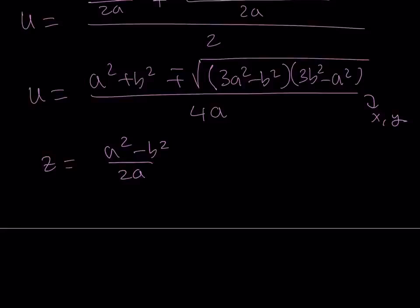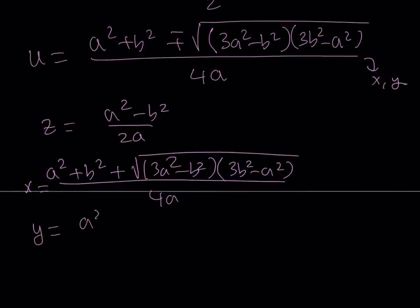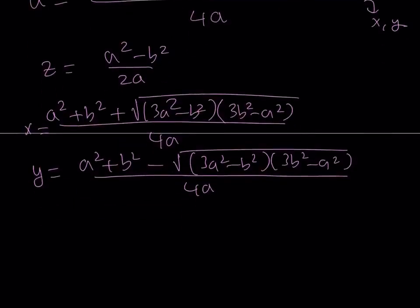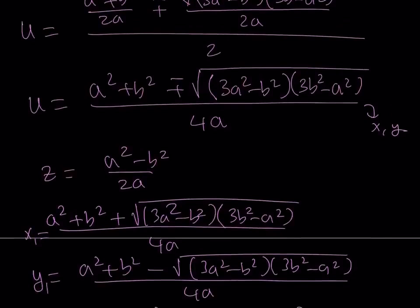Our solutions are: X₁ = [A²+B² + √((3A²−B²)(3B²−A²))]/(4A), Y₁ = [A²+B² − √((3A²−B²)(3B²−A²))]/(4A), and Z = (A²−B²)/(2A). X and Y can switch around, so (X₁, Y₁, Z) and (Y₁, X₁, Z) are both valid solution sets. Now our goal was to find conditions for these solutions to be distinct and positive.